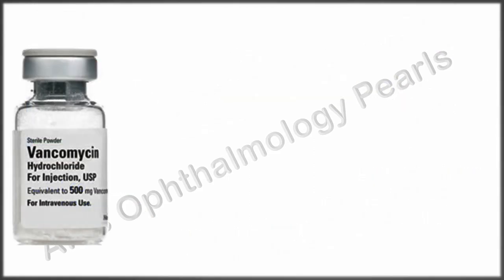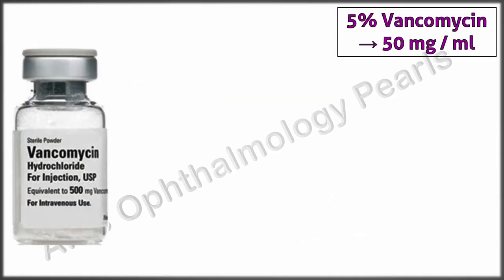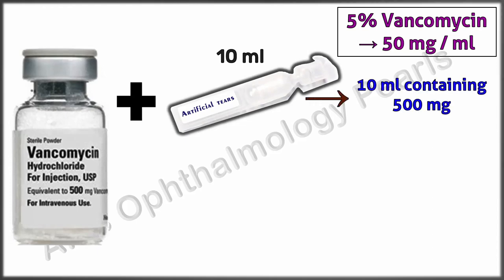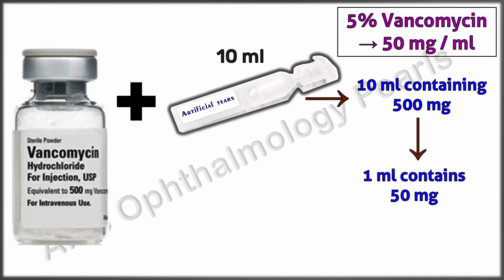Vancomycin is also required in a 5% concentration. To one 500 mg-containing vial, add 10 ml of either 0.9% sodium chloride without preservatives meant for injection, or artificial tears. This gives you a 10 ml solution containing 500 mg — that is, 50 mg/ml, or 5%.